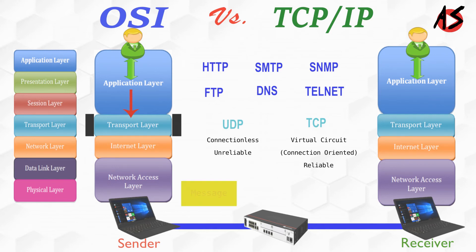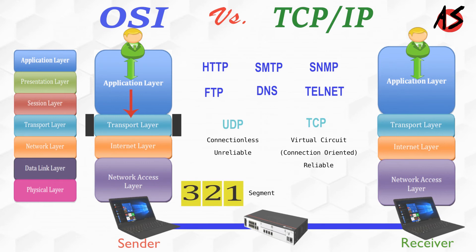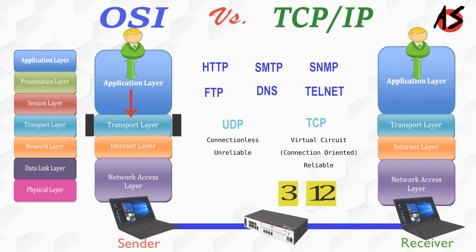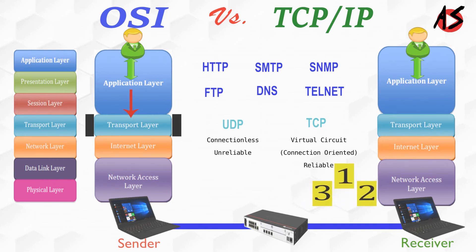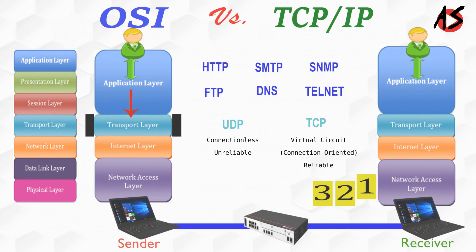At the sender, TCP divides the whole message into smaller units known as segments, and each segment contains a sequence number required for reordering the segments to form the original message. At the receiver, TCP collects all the segments and reorders them based on sequence numbers to reconstruct the whole message.